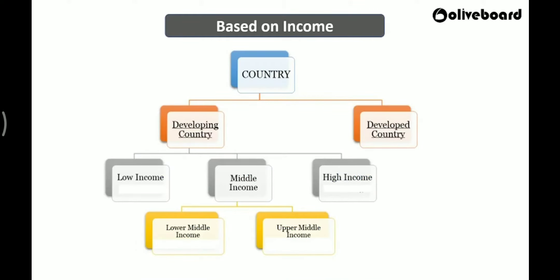Based on income, if you see developing and developed: under developing, we have low income, middle income, and high income. In middle income, we have lower middle income and upper middle income. It is similar to how we classify individuals as upper class, middle class, rich, or poor. A combination of all these parameters will decide whether a country is a developing, developed, or underdeveloped nation. Income here refers to national income, GDP — that is per capita income.